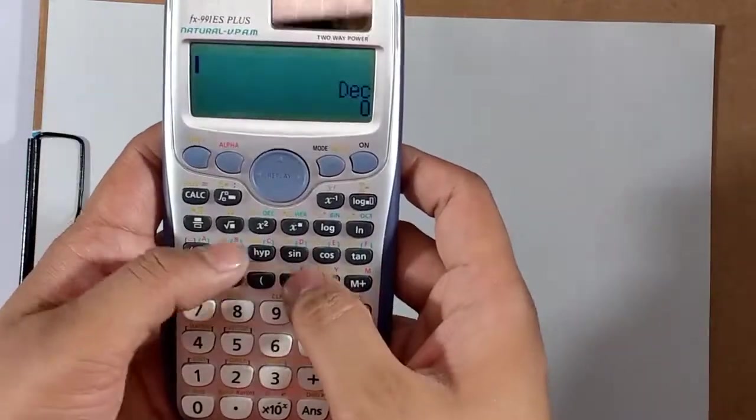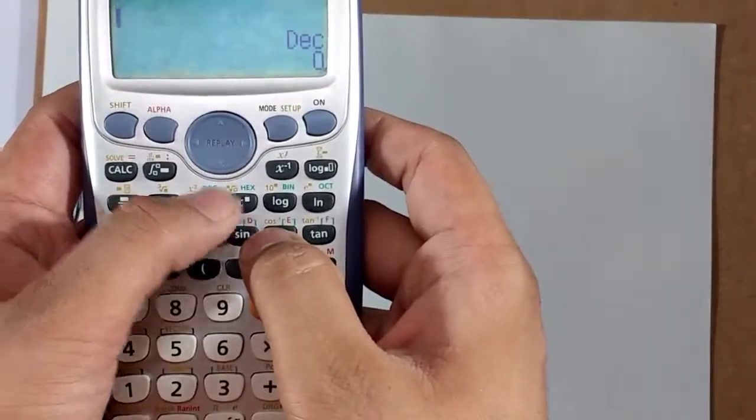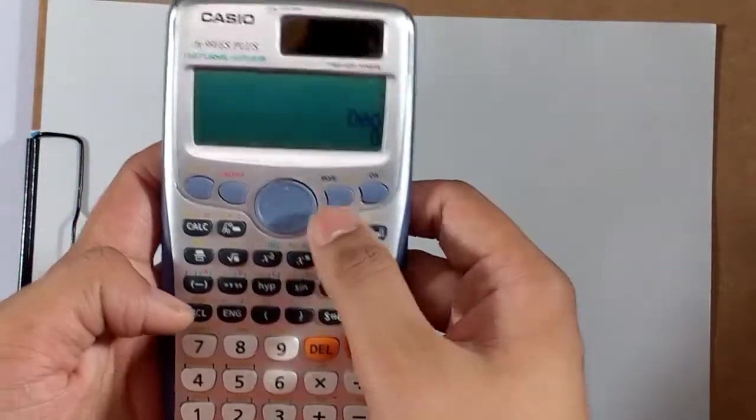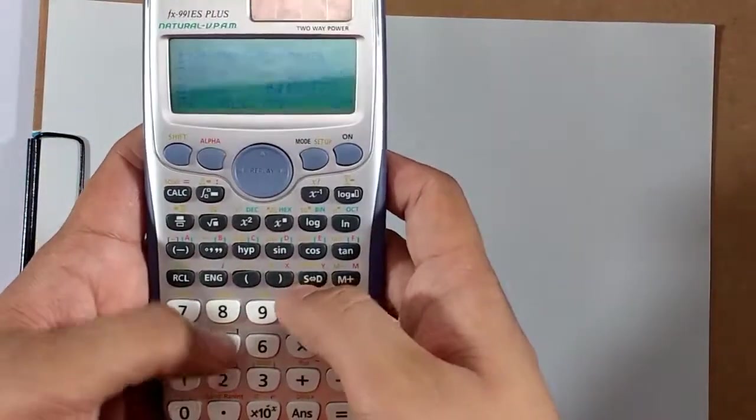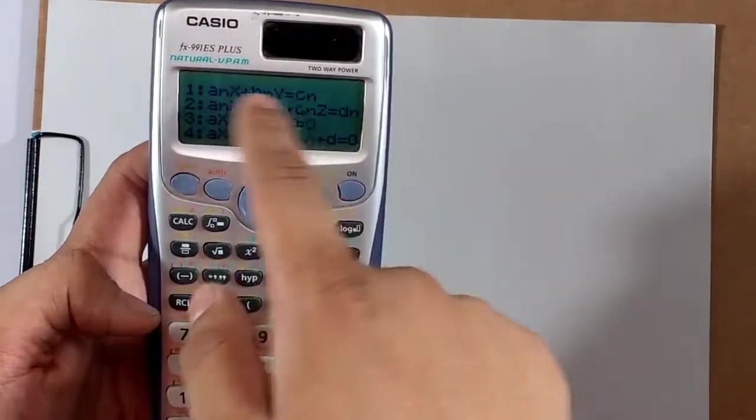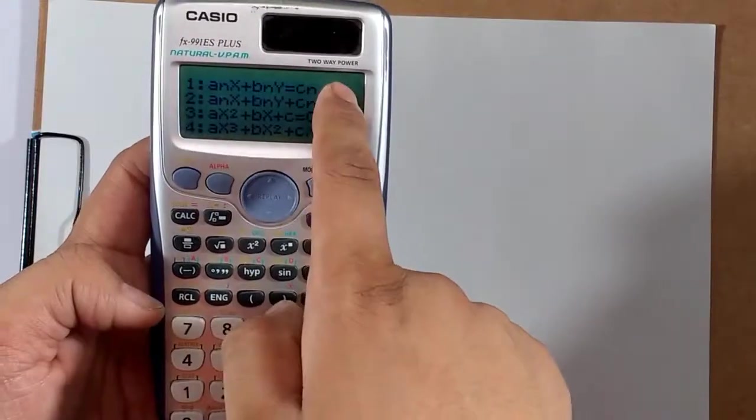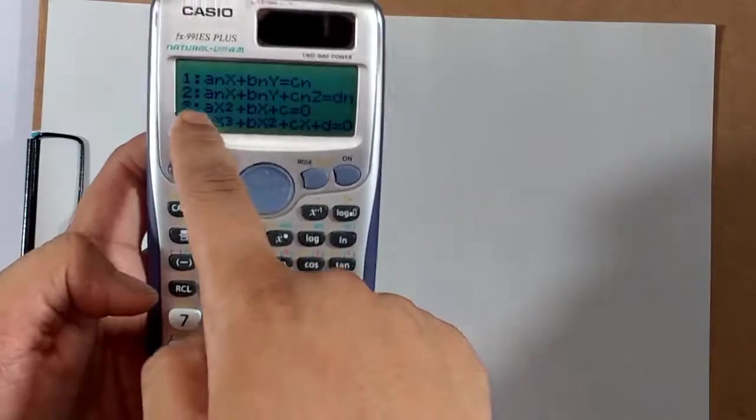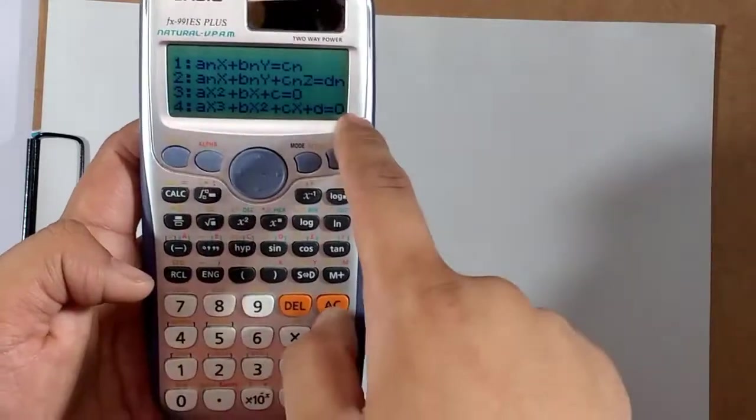Fourth is base N. For example, it covers decimal, hexagonal, binary, and octagon, again in the next video. Fifth is the equation. That's a very nice feature because it solves and gives us the roots for ax plus by equals c equation, three variables equation, quadratic equation, and cubic equation.